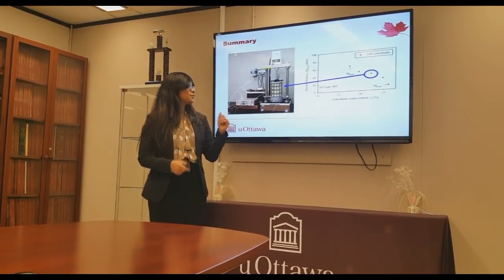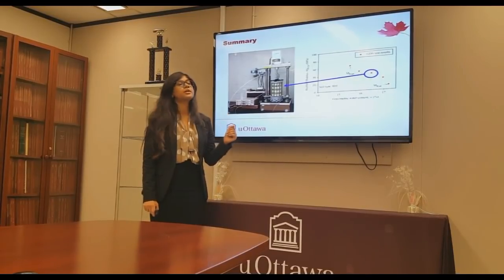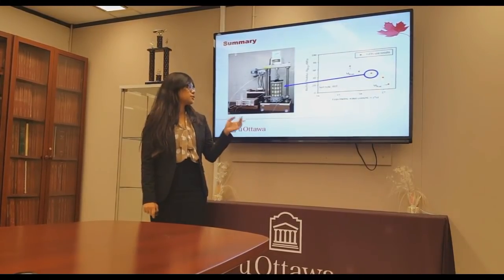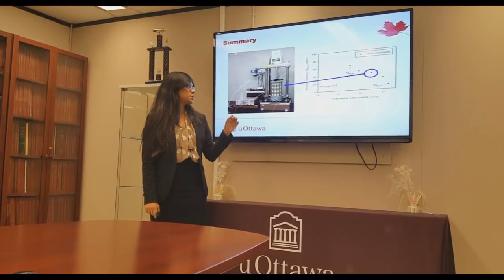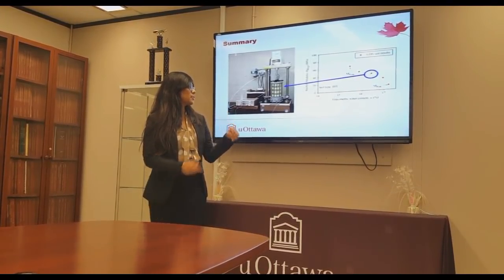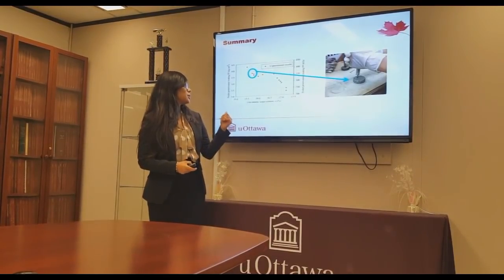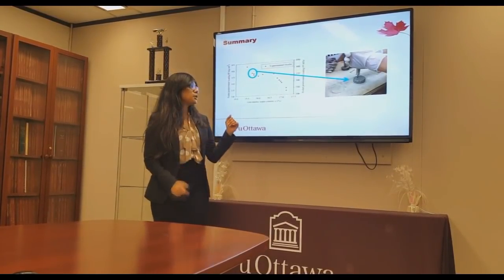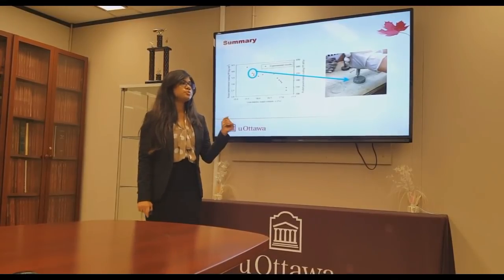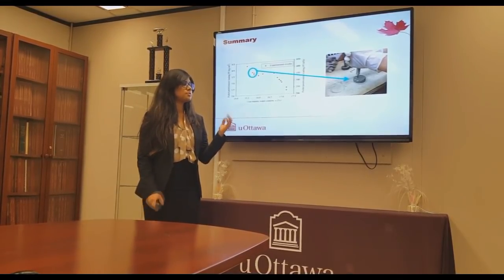This figure here represents the variation of resilient modulus for an unsaturated soil with respect to moisture content, and the resilient modulus has been estimated using the GDS triaxial testing system. The figure here represents the pocket penetrometer readings with respect to moisture content for the same unsaturated soil.